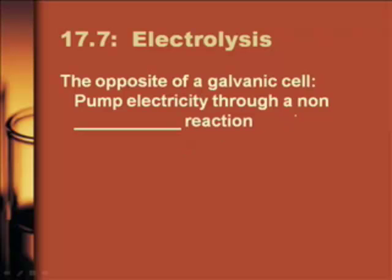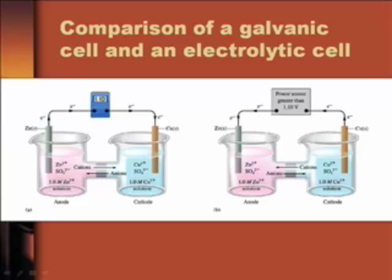But in this case, we're going to pump electricity through a non-spontaneous reaction. Because with our galvanic cells, you hook them up and they go because there's the spontaneous reaction. These ones don't go. You can only make them go if you add things together. And they're just the reverse of the spontaneous reactions that normally go.